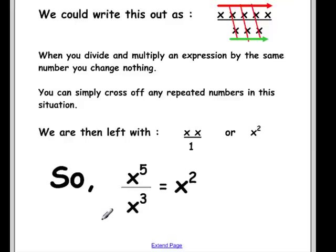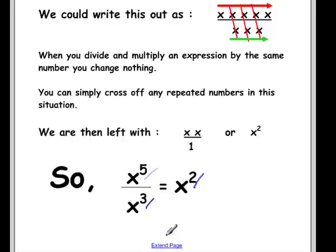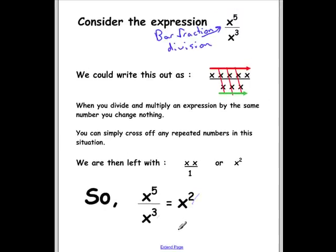So, x to the power 5 divided by x to the power 3 is equal to x to the power 2. How would 5, 3, and 2 be related? Hit pause right now and take a second to think about it. When you're ready to go on and figure out what's going on with this relationship, hit play.